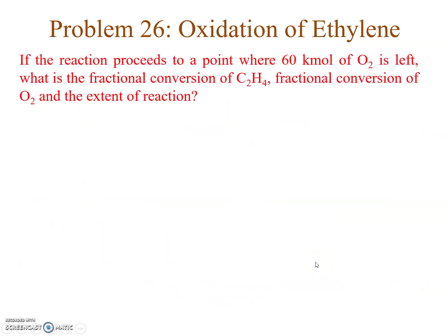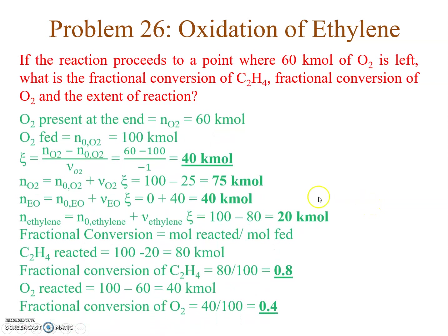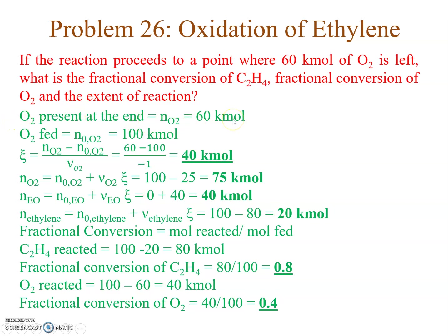If the reaction proceeds to a point where 60 kilo moles of oxygen is left, the extent of reaction is: ζ = (60 − 100) / (−1) = 40 kilo moles. Using this, we can find the final amounts of all species and the fractional conversion of C₂H₄ and oxygen. Thanks a lot for watching and please subscribe to my channel.